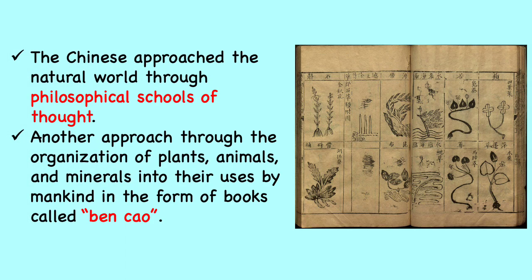The Chinese approached the natural world through philosophical schools of thought, organizing plants, animals, and minerals into their uses by mankind in the form of books called benkao, often translated as pharmacopeia. The benkao are texts that include natural history, biological classifications, and practical and medical uses of natural materials — in modern terms, biology, geology, and medicine. By the Ming Dynasty, great comprehensive benkao texts had been compiled that are still used in China today — for example, the Benkao Gangmu by Li Shizhen.